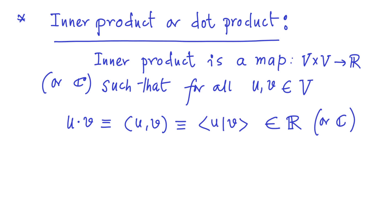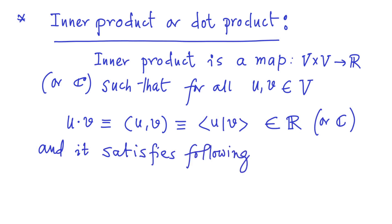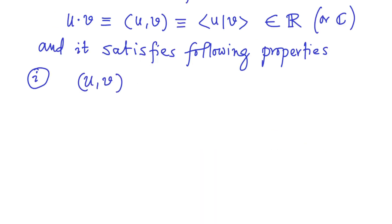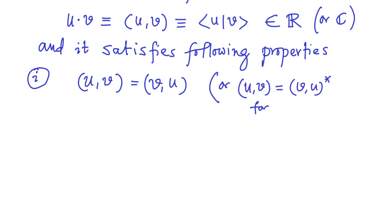In other words, if you give me two vectors then the inner product is a map which will give us a real number or complex number depending on the kind of vector space we are dealing with. It also satisfies four properties. The first property says that the inner product between u and v should be equal to the inner product between v and u. In case we are dealing with a vector space over complex numbers, the first property should read as the inner product between u and v is equal to the complex conjugation of the inner product between v and u.